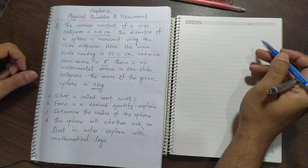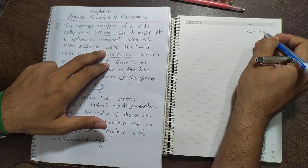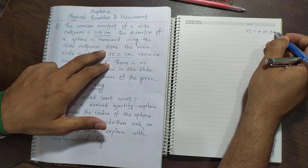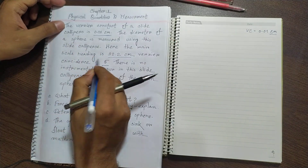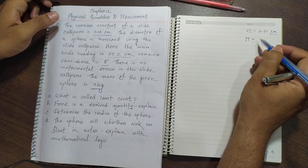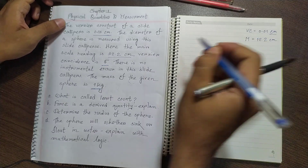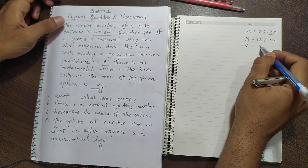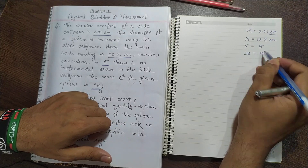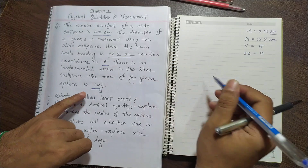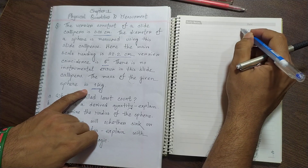So the vernier constant is given as 0.01 centimeter. It is very important to focus on the unit. The main scale reading, expressed as M, is 12.2 centimeter. The vernier coincidence V is equal to 5. There is no instrumental error in the slide calipers, and the mass of the sphere is 1 kilogram.